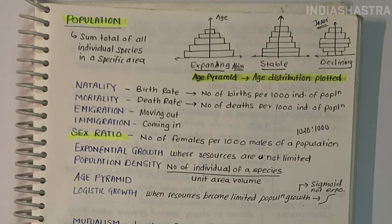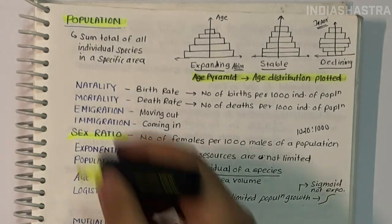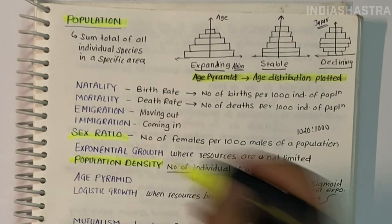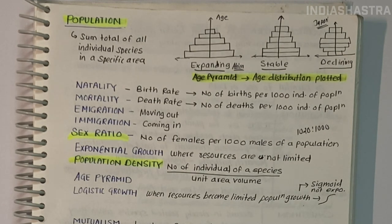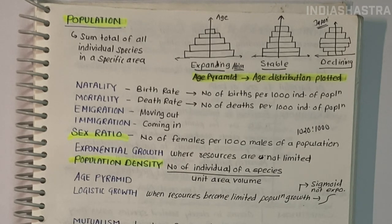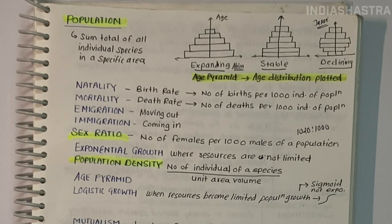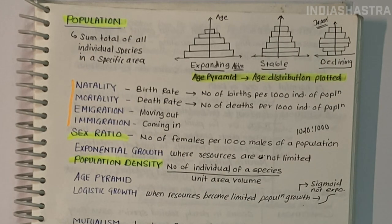Population density is the concentration of individuals within a species in a specific geographic area. The density of population in a given habitat fluctuates due to changes in four basic processes: natality, immigration, mortality, and emigration — the first two contribute to increase and the last two to decrease.